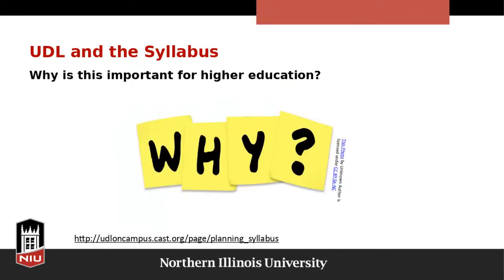Now, UDL and the syllabus. Often the syllabus gives students the first impression about what they should expect from the upcoming learning environment. If you create an accessible syllabus, that signals to students that the rest of your course will have a focus on accessibility as well. The syllabus is an opportunity for each instructor, faculty member, or TA to set the class climate, identify specific learning expectations, and discuss options and accessibility.